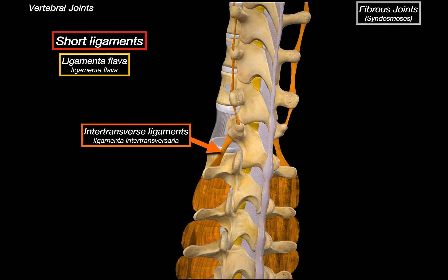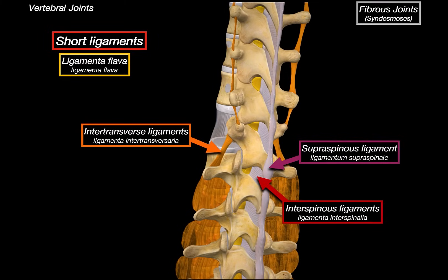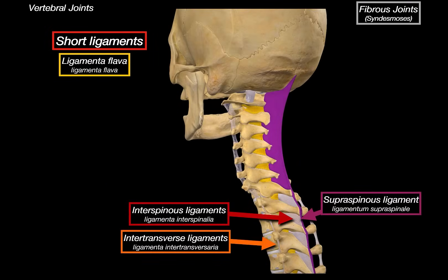The interspinous ligaments connect one spinous process to the next, helping limit flexion by resisting separation of the spinous processes when bending forward. The supraspinous ligament runs along the tips of the spinous processes from the sacrum up to the cervical spine, also limiting flexion and keeping the midline together. In the cervical region, the supraspinous ligament broadens and becomes the nuchal ligament, which is much thicker and supports the weight of the head while serving as a site for muscle attachments.